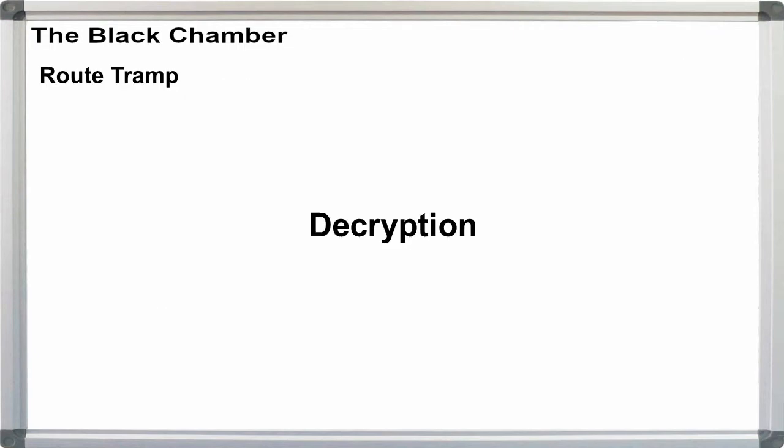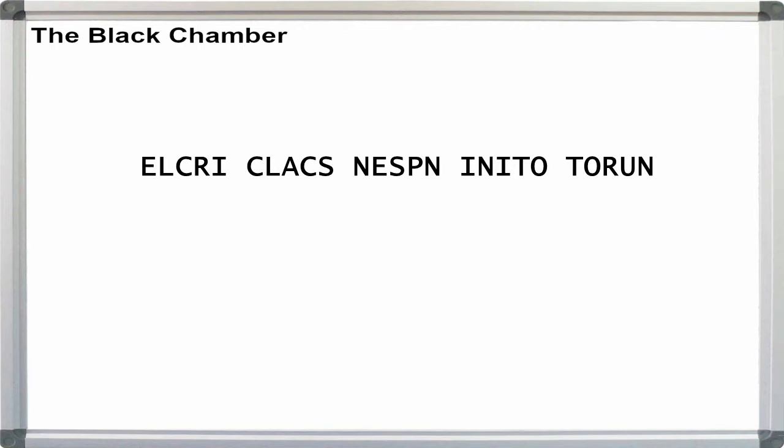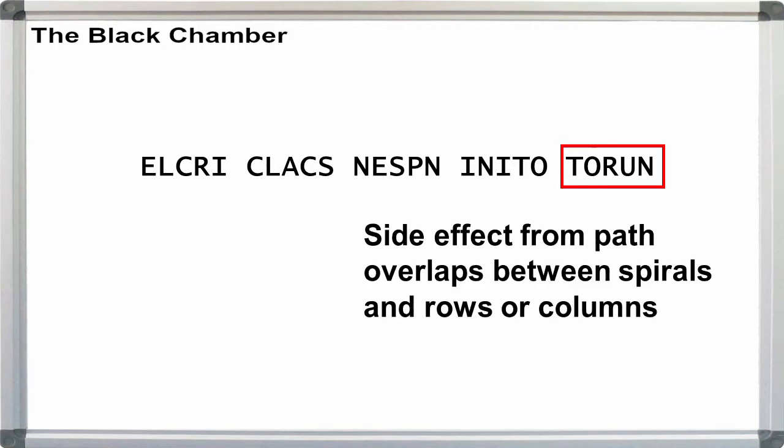Decryption. Decryption is the exact same process, but in reverse. Say we have the following message. Notice that part of our message is still readable. This usually occurs when spirals are combined with rows or columns. But this is not always guaranteed.